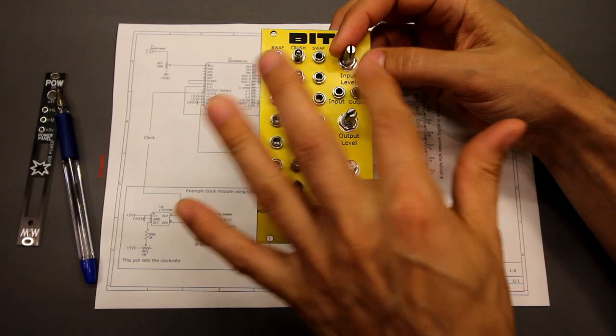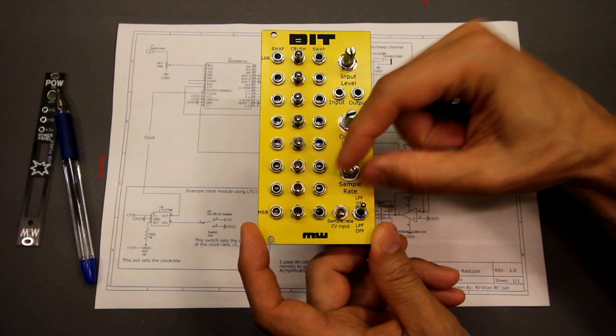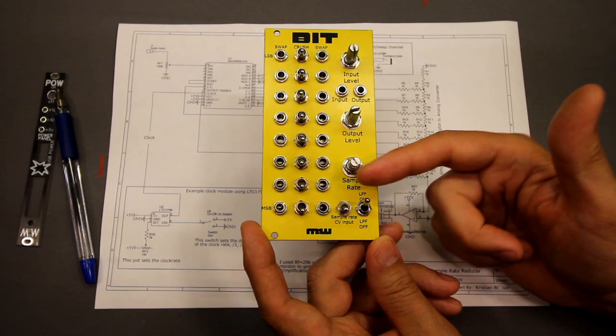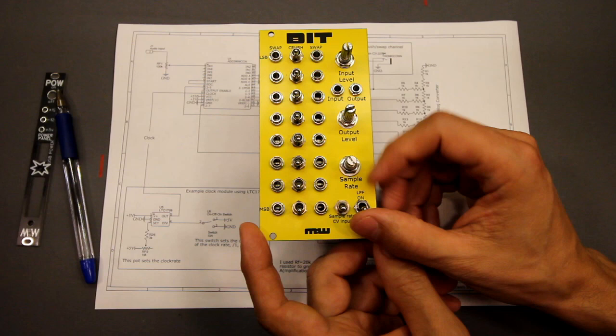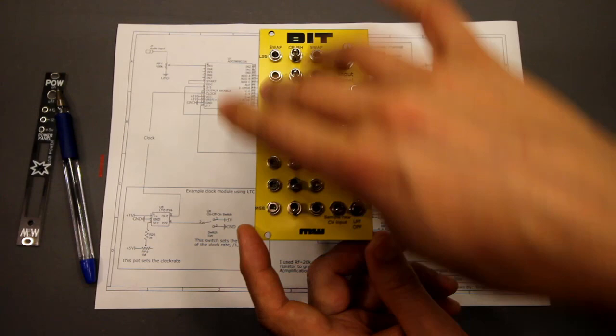So there's an input level, an output level, the sample rate the same as we did before. And then I've added a low pass filter which is switchable on and off because sometimes you want that gritty sound and then you turn it off. And if you want to smooth the sound out you turn it on. So that's it. And all the swaps and the crushes of the bits.